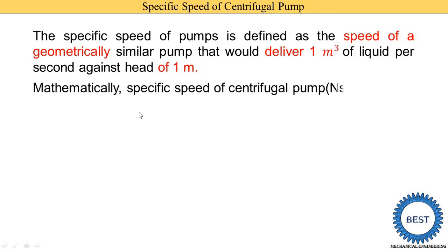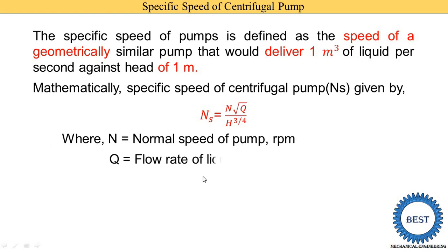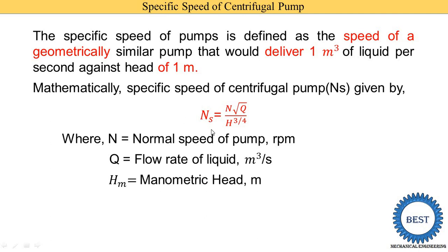Mathematically, the specific speed of a centrifugal pump is denoted as Ns and is given by: Ns = N√Q / H^(3/4), where N is the normal speed of the pump in RPM, Q is the flow rate in cubic meters per second, Hm is the manometric head in meters, and Ns is the specific speed.